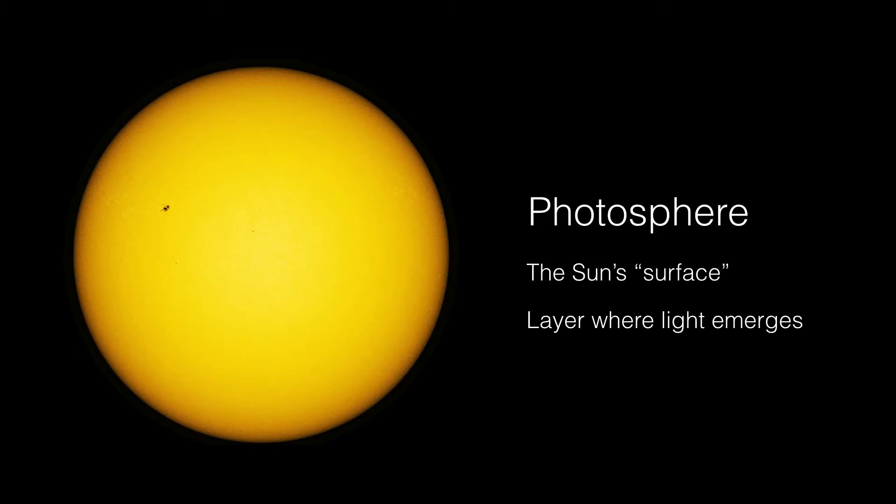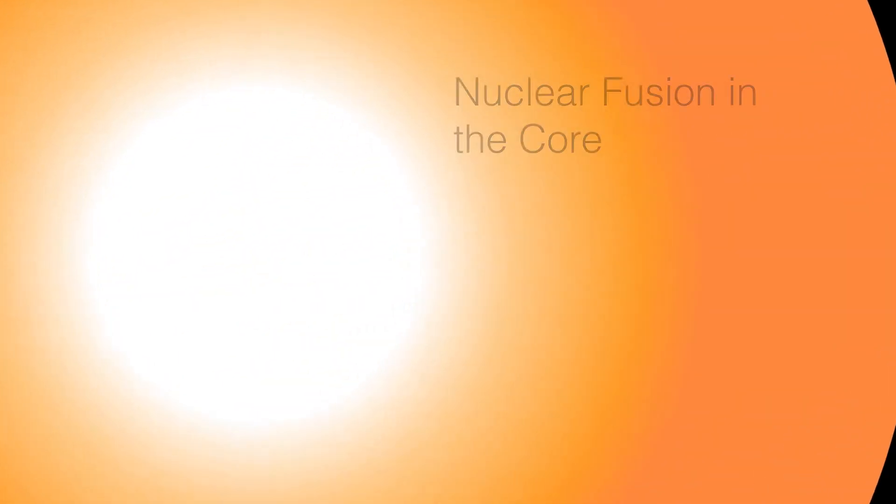To recall, the photosphere is the only part of the Sun that we can really see. In other words, we cannot peer any deeper into the atmosphere, but we've been able to deduce the processes that go on inside of the Sun. Let's take a look inside the core and try to understand the process of nuclear fusion.